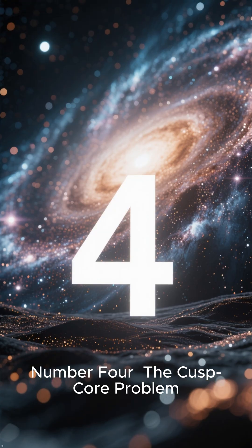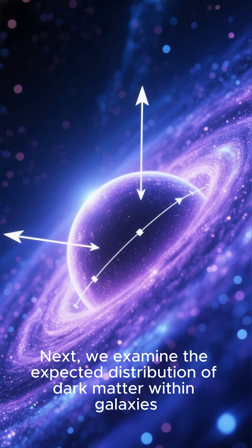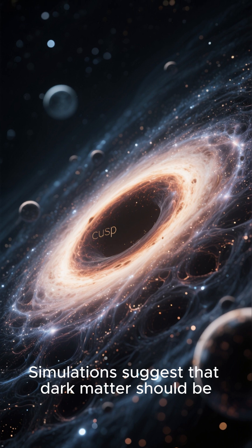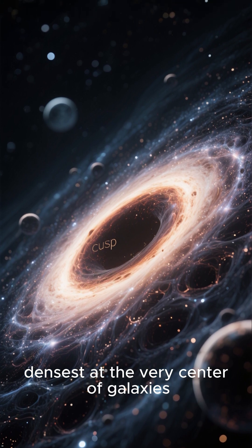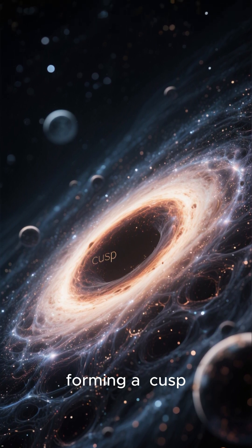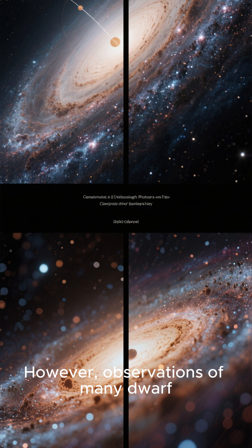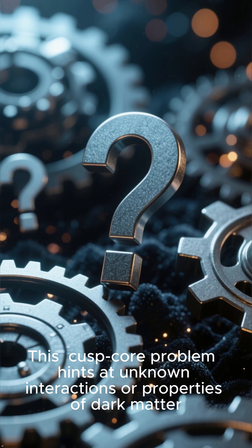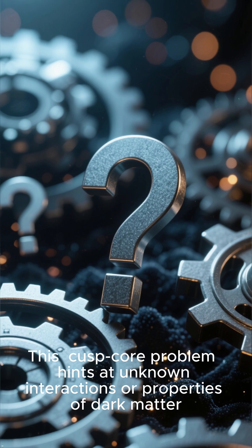Number 4: The Cusp-Core Problem. We examine the expected distribution of dark matter within galaxies. Simulations suggest that dark matter should be densest at the very center of galaxies, forming a cusp. However, observations of many dwarf galaxies show a flatter distribution, or a core. This cusp-core problem hints at unknown interactions or properties of dark matter.